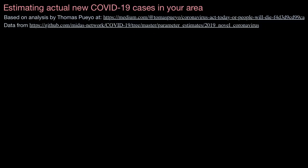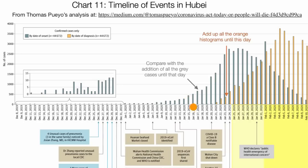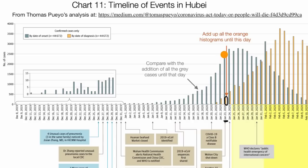We can see that in graphical form. This is a diagram put together by Thomas Pueyo — a screenshot from his blog post — showing what was happening in Hubei province, which is the province where Wuhan is. The vertical axis is the number of cases and the horizontal axis is per day. For example, on January 23rd, the yellow bar tells us the number of confirmed new cases that day — people who were tested and tested positive — and it looks like that number is about 300. But then we have this gray bar, which is the actual number of new cases that day, close to 2,500 — roughly eight times as high.